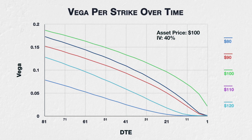With these parameters, we can see the vega of the at-the-money strike of $100 decreases steadily at first, then decreases at an accelerating rate as we come into expiry. The next closest strikes of $90 and $110 behave similarly, though with lower values, except for when we get very close to expiry, which is also when most of their extrinsic value will be gone.